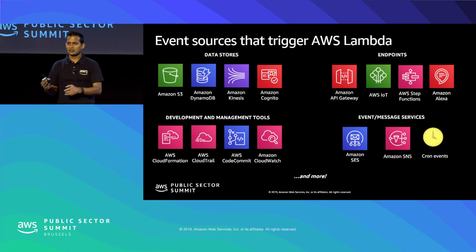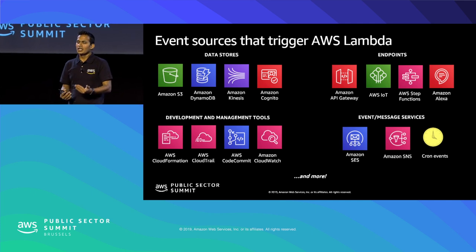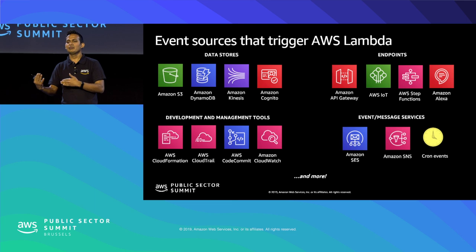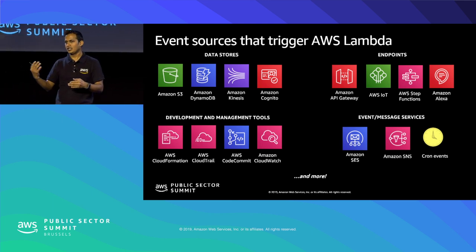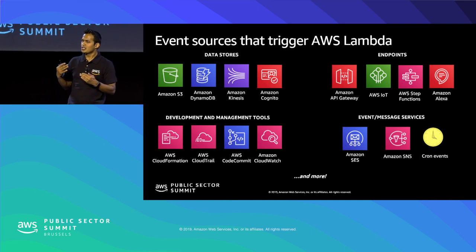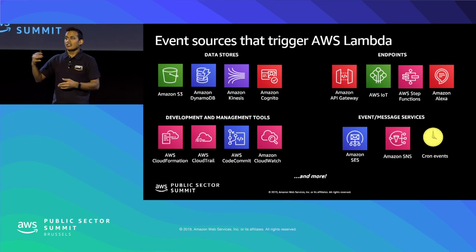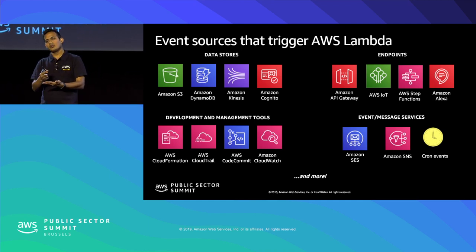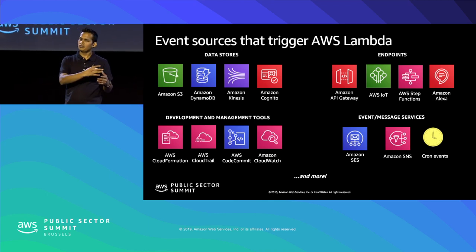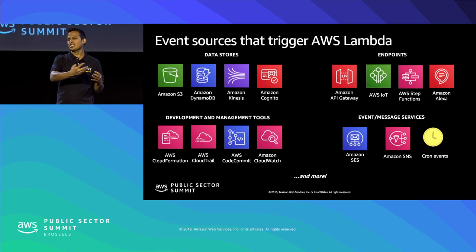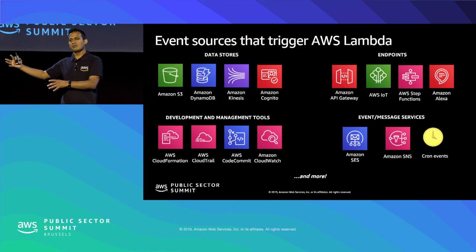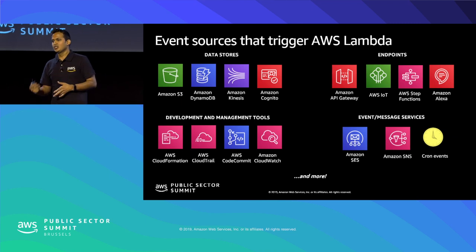There are three execution models for Lambda. First, synchronous execution — like an API request-response model where you send a request and immediately expect a response. Second, asynchronous — for example uploading a file to S3 or sending a message to SNS triggers Lambda asynchronously. Third, stream processing — using DynamoDB streams or Kinesis streams, where changes to DynamoDB or incoming clickstream data trigger a Lambda function for real-time processing.